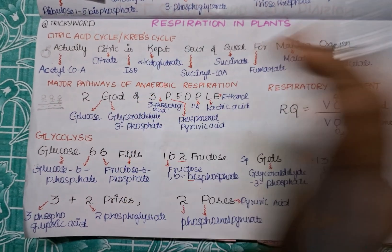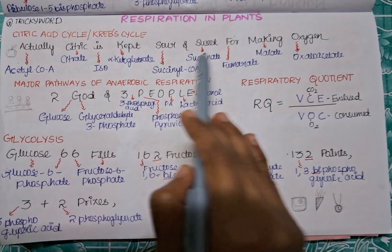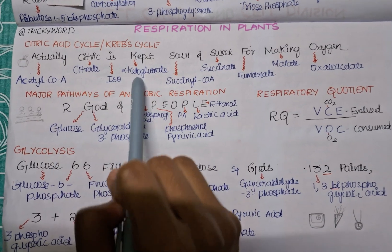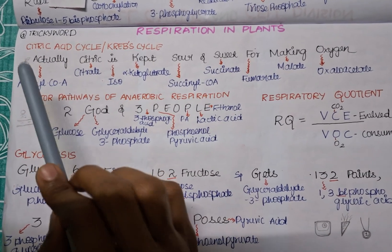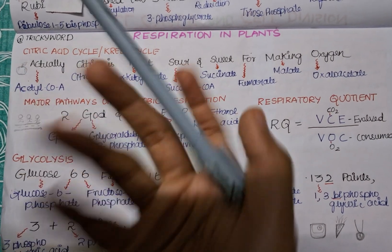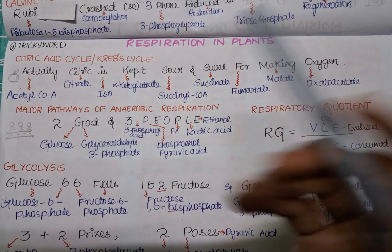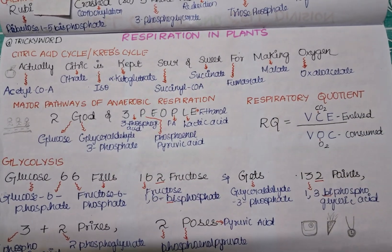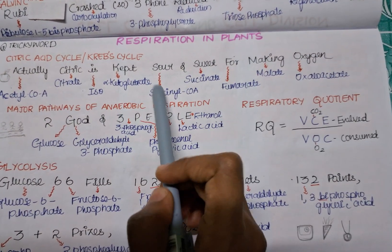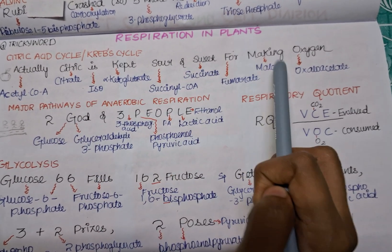For the citric acid cycle, I have made citric itself the hero of the short trick. Consider this as an orange — orange has citric acid. The trick is: 'Citric is kept sore and sweet for making oxygen.' You might have tasted an orange, which sometimes tastes sour and sometimes sweet. So the mnemonic is: Citric is kept sore and sweet for making oxygen.